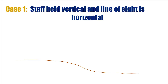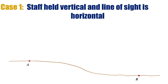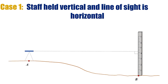For example, if we have a flat terrain on which we have two points and the distance between them is required, then the instrument will be placed at one point and the staff will be held at the other point. Let's say we are placing our instrument at point A and the staff at point B. Since the line of sight is horizontal and the staff is vertical, they will be making an angle of 90 degrees with each other.